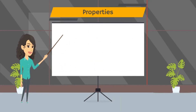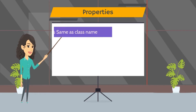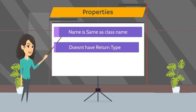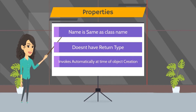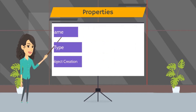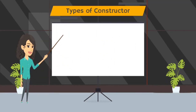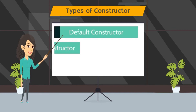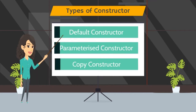A constructor is a special function and has some special properties. The name of the constructor is always the same as the class name. The constructor doesn't have any return type. The constructor automatically gets invoked when the object is created. There are three types of constructors: the default constructor, the parameterized constructor, and the copy constructor.